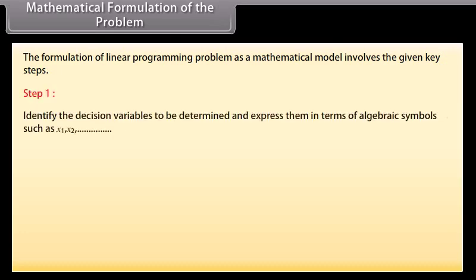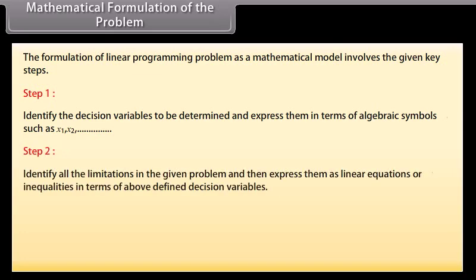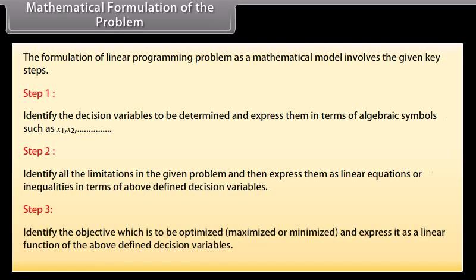Mathematical formulation of the problem: the formulation of a linear programming problem as a mathematical model involves the following key steps. Step 1: identify the decision variables to be determined and express them in terms of algebraic symbols such as X1, X2, etc. Step 2: identify all the limitations in the given problem and express them as linear equations or inequalities in terms of the defined decision variables. Step 3: identify the objective which is to be optimized — maximized or minimized — and express it as a linear function of the defined decision variables.